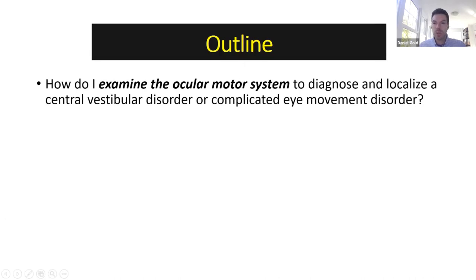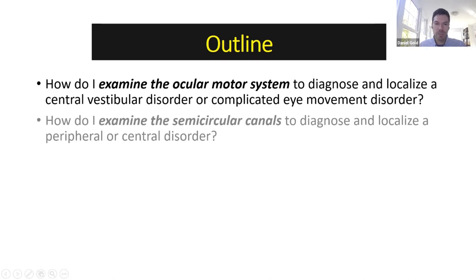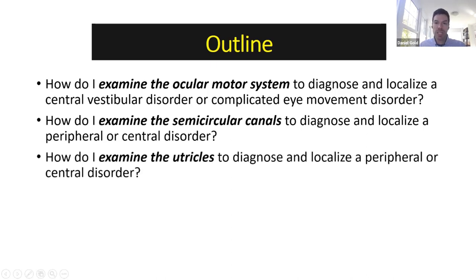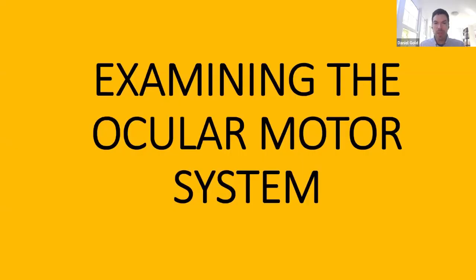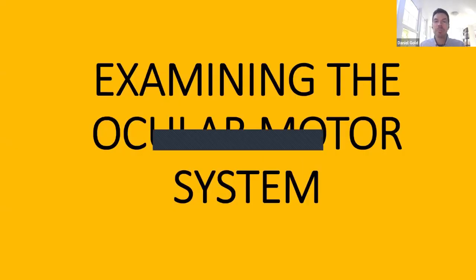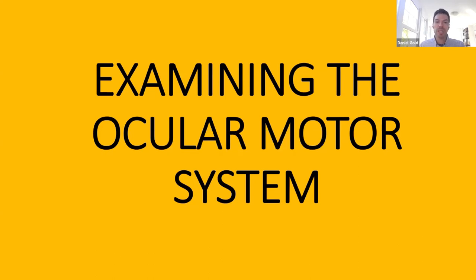What I'll be talking about: how do you examine the ocular motor system, is this a central vestibular disorder or not, how do you examine the semicircular canals, how do you examine the utricles to diagnose and localize, to differentiate a peripheral from a central disorder. By the end of this talk you should understand, from the bedside exam, whether your patient's symptoms of dizziness and/or imbalance are central or peripheral.